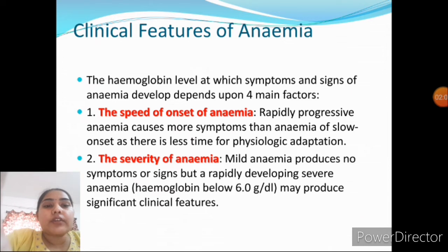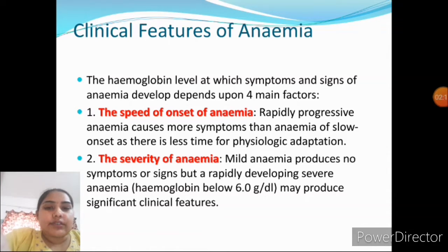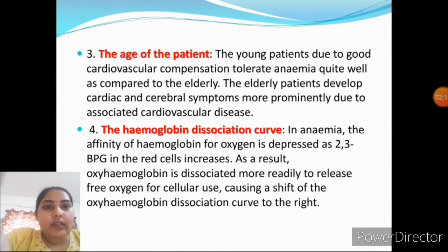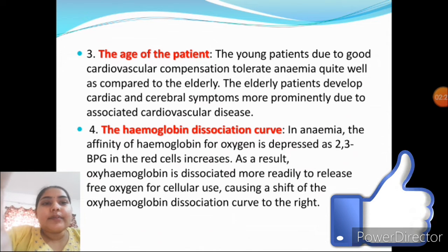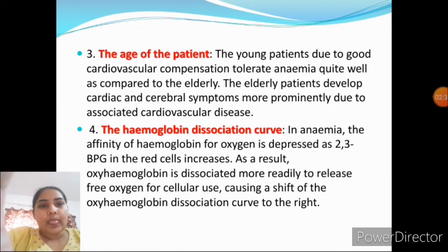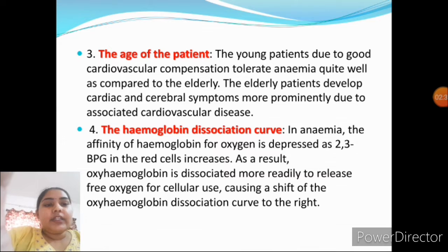Second is the severity of anemia — mild anemia produces no symptoms or signs, but rapidly progressive severe anemia with Hb below 6 g/dL may produce significant clinical features. Third is the age of the patient — young patients, due to good cardiovascular compensation, tolerate anemia quite well compared to elderly patients.